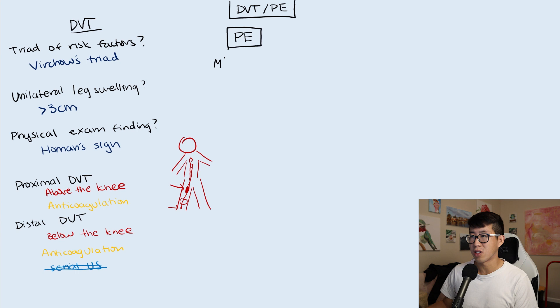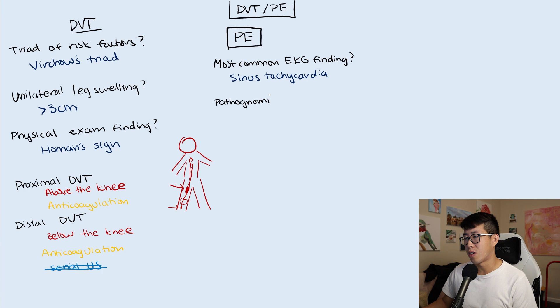This is such a common question you will no doubt be pimped on this multiple times. What is the most common EKG finding of a PE? The answer is sinus tachycardia. Many times people will say the next answer, which is not really the most common finding, but the most common is sinus tachycardia.